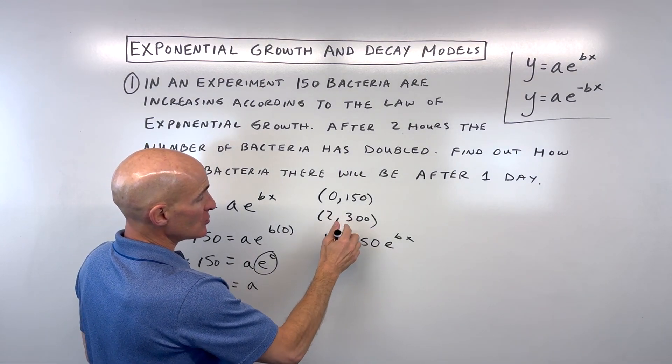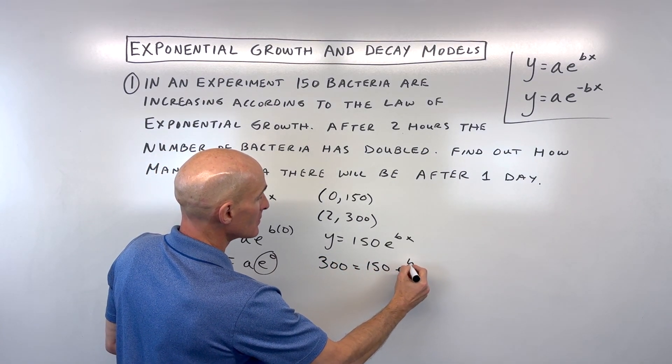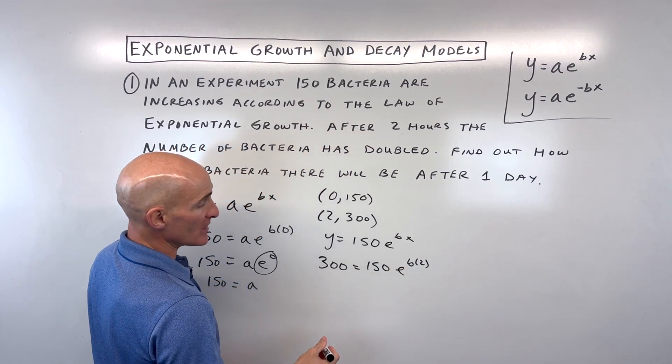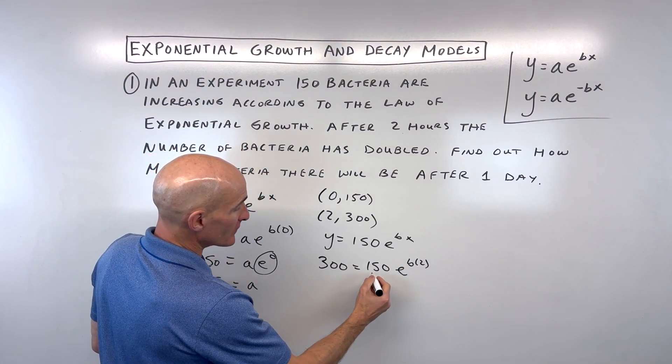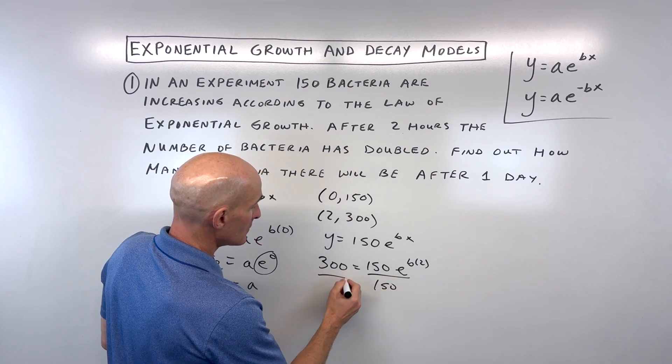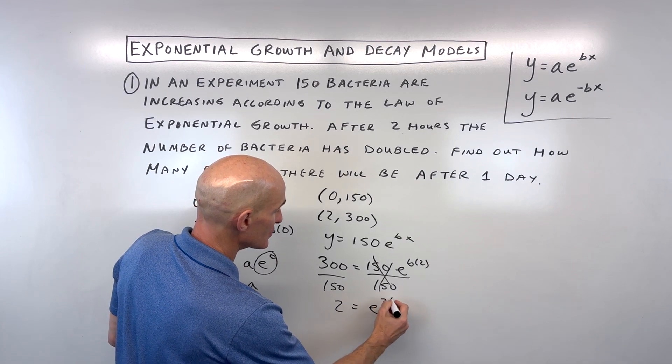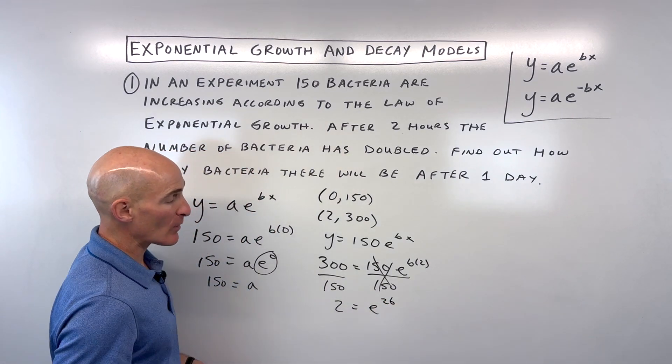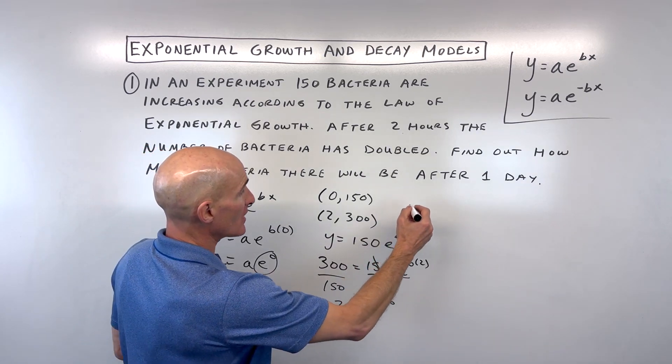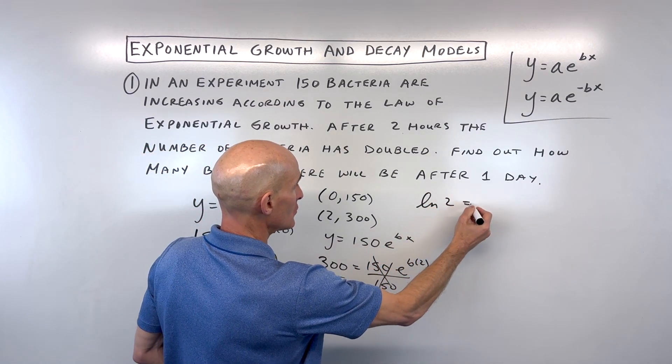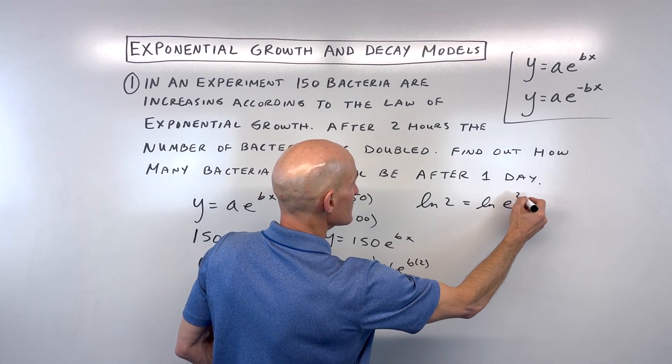We know this point is on our graph. When x is 2, y is 300. Let's substitute those values and solve for b. Divide both sides by 150, which gives us 2 equals e to the 2b. Then take the natural log of both sides: natural log of 2 equals natural log of e to the 2b.